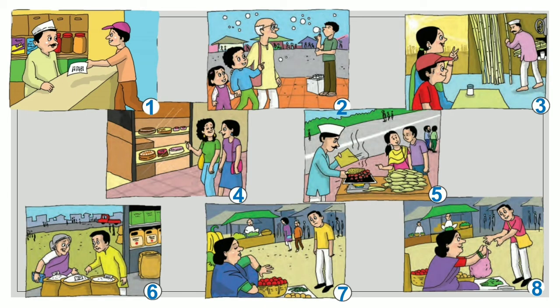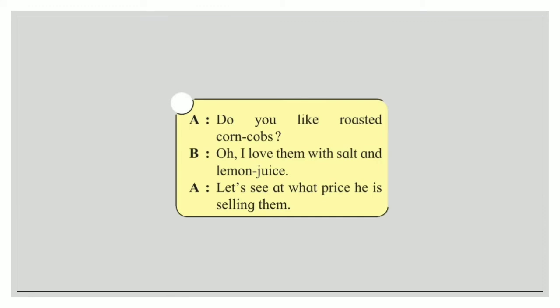See where the corn seller is — yes, picture number 5. So we will put number 5 to this conversation.